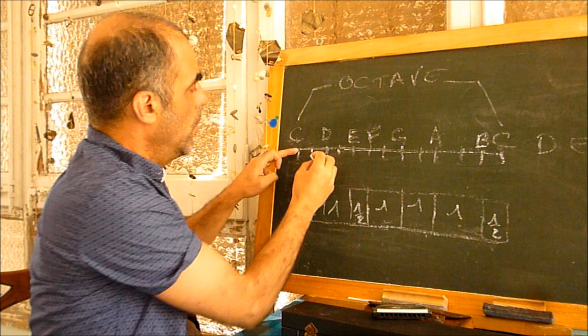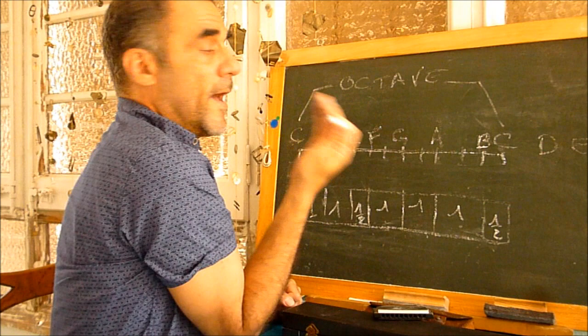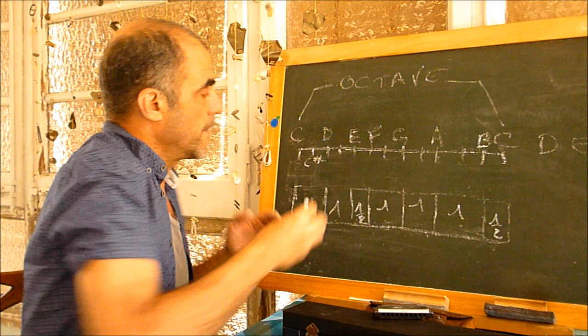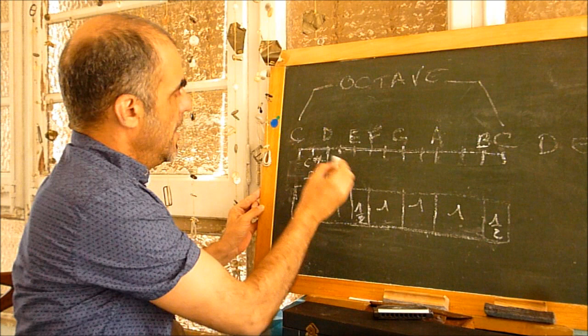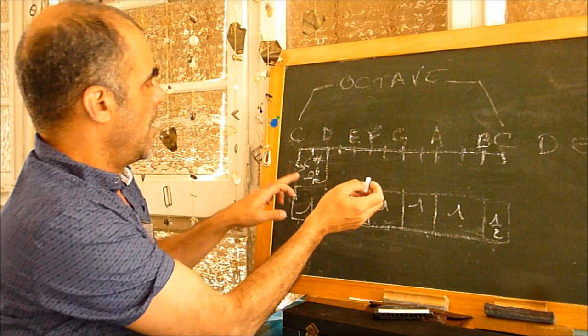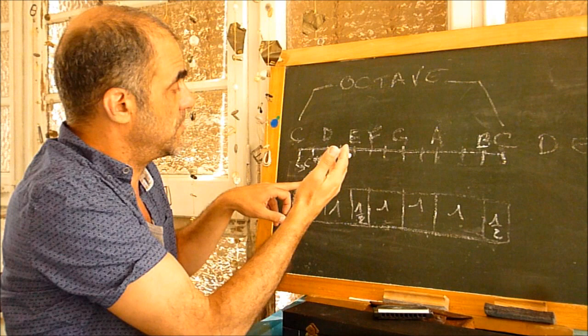If we have C and we want to add one half tone, we call that note C sharp. If we are talking about D and we want to take off one half tone, we call that note D flat. So from D, one half tone down is D flat, and from C, one half tone up is C sharp. That means C sharp and D flat are the same note — it's the same note.